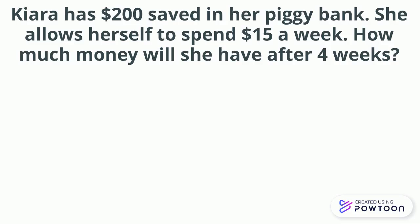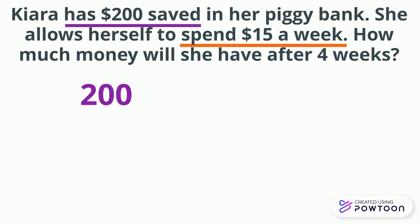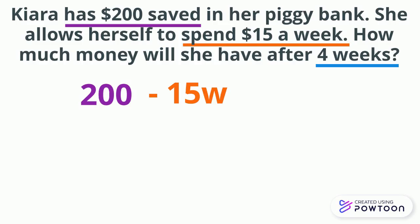Next example: Kara has $200 saved in her piggy bank and allows herself to spend $15 a week. How much money will she have after four weeks? She already has $200, so that's her constant or given amount. She spends $15 per week — 'per' tells us that's the rate that goes with the variable. Since she's spending money, we subtract: our expression is 200 minus 15W.